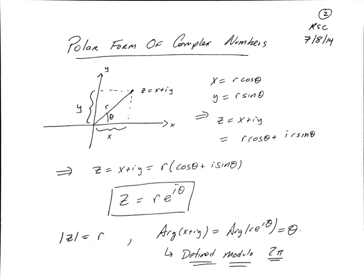The modulus of z is just the distance from the origin, which is the radius r. This angle theta is called the argument of z. So the argument of x plus iy, or equivalently of r e to the i theta, is just theta itself. Notice that this angle theta is actually only defined modulo 2 pi, because I could always add or subtract 2 pi from it and still represent the same angle in the complex plane.